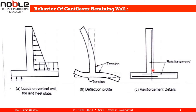For the stem, reinforcement is provided on the side facing the retained earth. For the heel slab, tension is on the upper surface so reinforcement is provided on the upper side. For the toe slab, tension arises on the bottom side so main reinforcement is provided at the bottom. These are the behaviors of a cantilever retaining wall: the load diagram, deflection profile, and reinforcement detail.